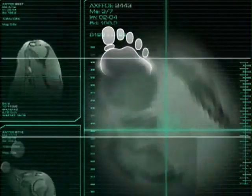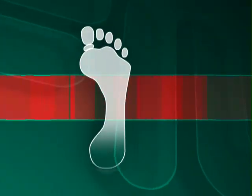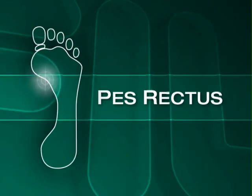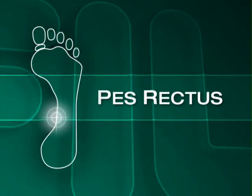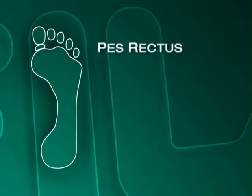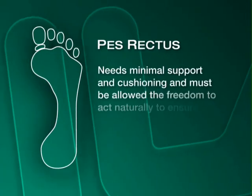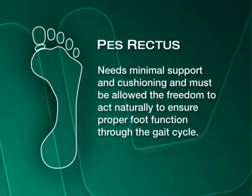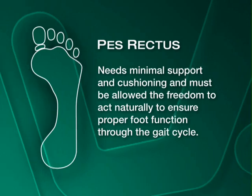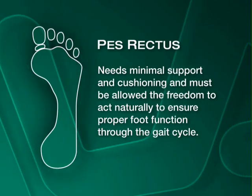The second category is what we call pes rectus, or the normal arch. That foot is fairly easy to take care of. It has a normal range of motion, and I don't really see any rigid rectus or normal feet.